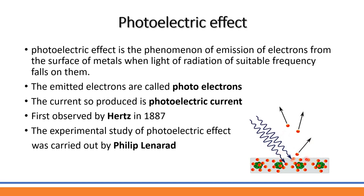When radiation falls on the metal surface and the electrons absorb energy, they get ejected from the metal surface. These ejected electrons are called photoelectrons, and the current produced due to the motion of photoelectrons is called photoelectric current.